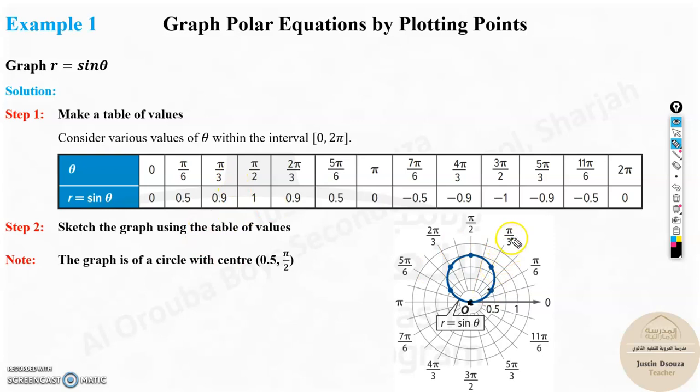Next, π/3 here, 0.9. One is here. 0.5 is here. This is 0.75. And 0.9 is somewhere here. Same way, π/2, that is 1, exactly here. 2π/3. And you just plot all these.